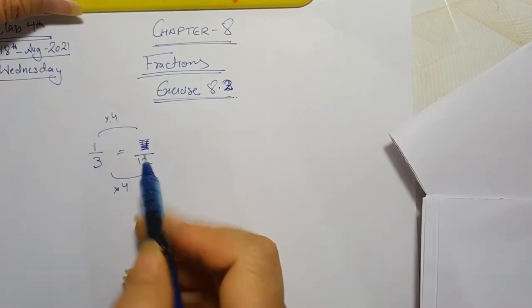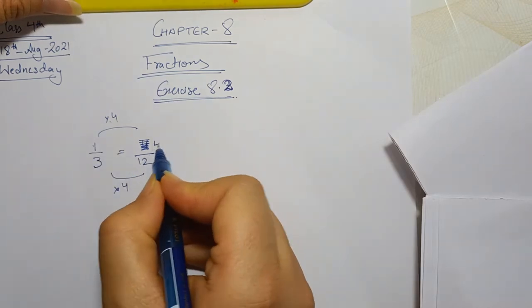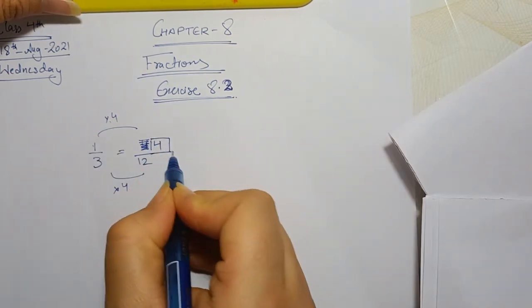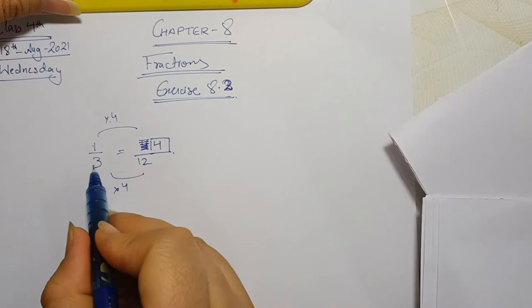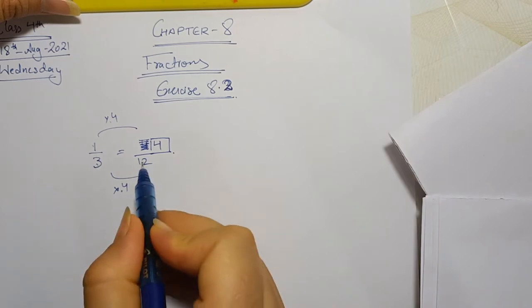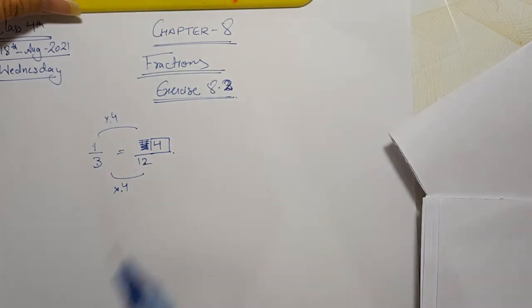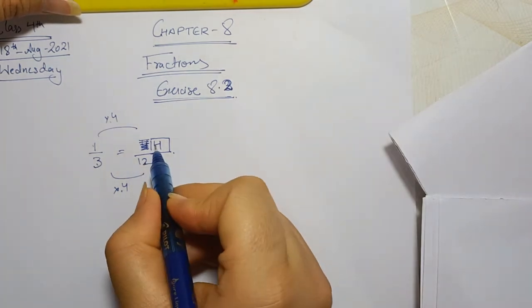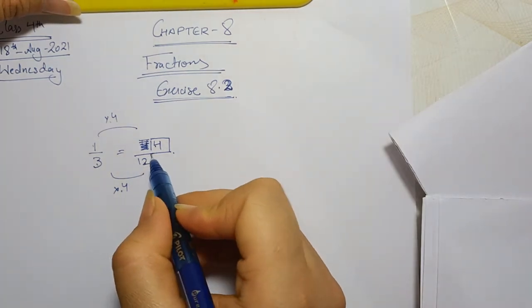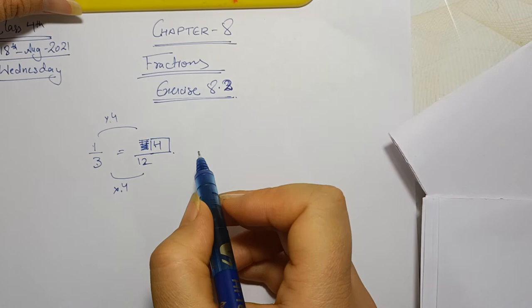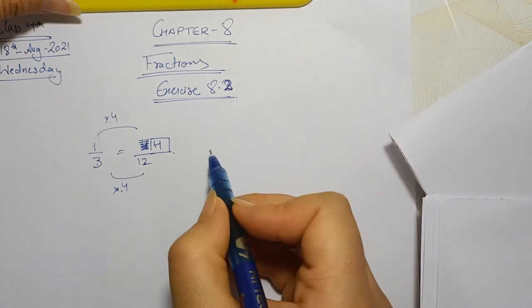1 times 4 is 4, so the numerator is 4. 3 times 4 is 12, so you fill in the blank to make the equivalent fraction: 1/3 = 4/12.